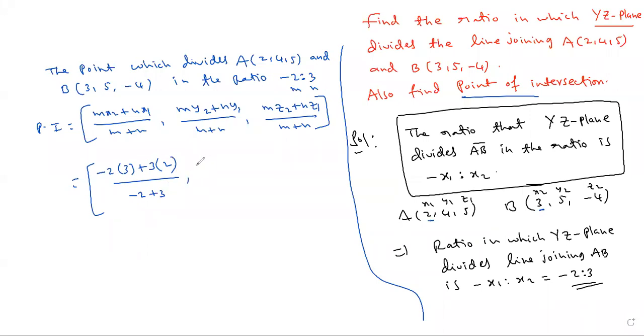Comma, M Y2, minus 2 into Y2 is 5, plus N 3 into Y1 is 4, by M plus N.